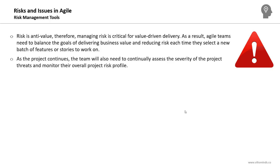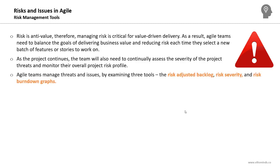As the project continues, the team will also need to continually assess the severity of the project threats and monitor their overall project risk profile. They should do an assessment each while to monitor the overall risk profile. Agile teams usually manage their threats by examining three popular tools: the risk-adjusted backlog, risk severity, and risk burndown graphs.